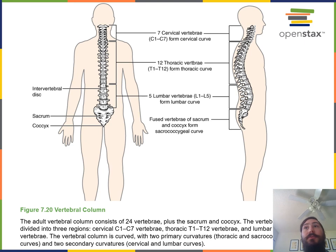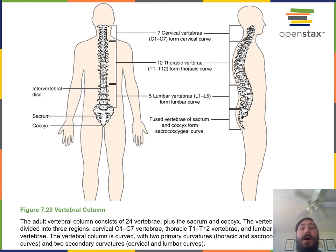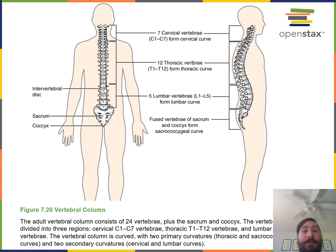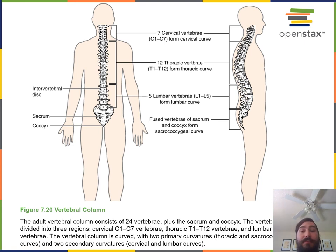Next we'll study the bones of the vertebral column. There are 26 bones: seven in the cervical region, 12 in the thoracic region, five in the lumbar region, then the sacrum — one bone formed from five fused sacral vertebrae — and the coccyx, or tailbone, which is the most inferior of the vertebrae.